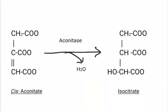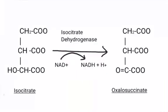Cis-aconitate, in the presence of the enzyme aconitase, gets converted into isocitrate. Here, one water molecule is released. Now isocitrate, in the presence of the enzyme isocitrate dehydrogenase, gets converted into oxalosuccinate.